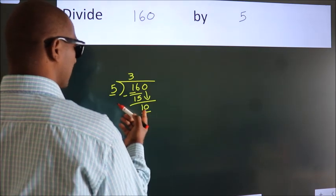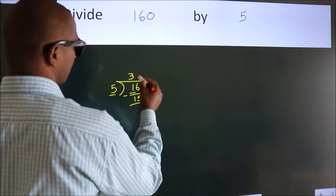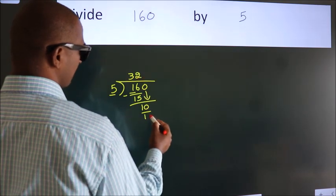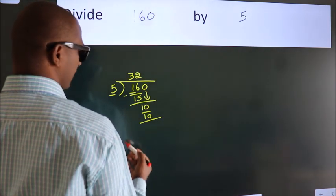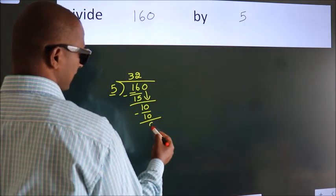When do we get 10 in the 5 table? 5 twos equals 10. Now we subtract and get 0.